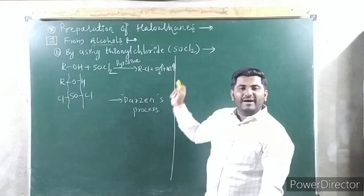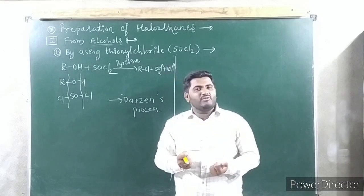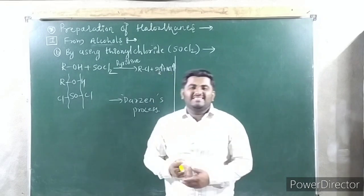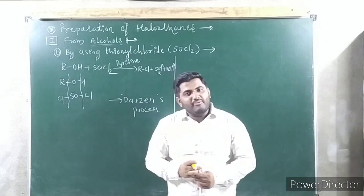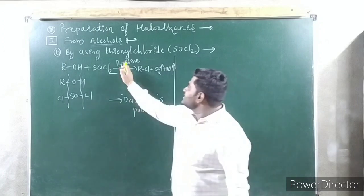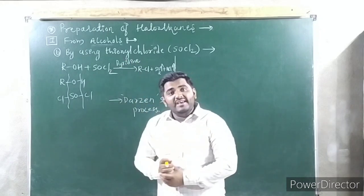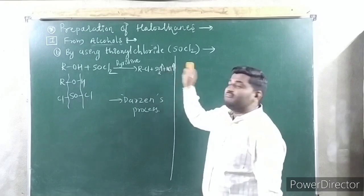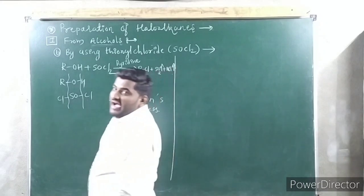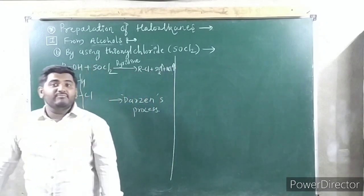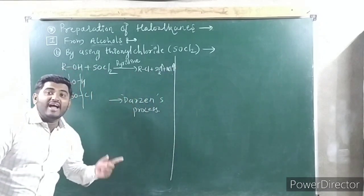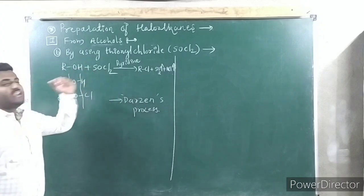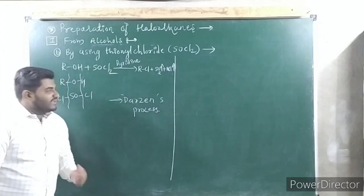Why is this the best method compared to others? Because the byproducts are gases in nature. What is the role of pyridine here? Pyridine is used to neutralize the HCl formed during the reaction. And very importantly, this reaction proceeds via an SN2 mechanism — pyridine is also required for that.